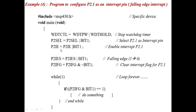Next, we need to enable the interrupt. For that, we use P2IE, where IE means interrupt enable. So P2IE = P2IE | BIT1 enables the interrupt on P2.1. For enabling, we give 1; for disabling, 0. By default it is in disabled condition. Whenever we give 1 to P2.1, the interrupt will be enabled on P2.1.